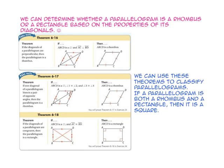Remember, if a parallelogram is both a rhombus and a rectangle, then it is a square.